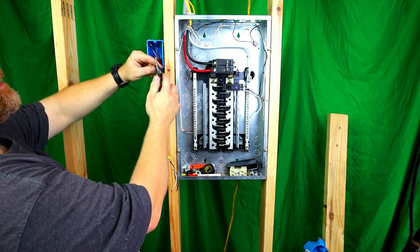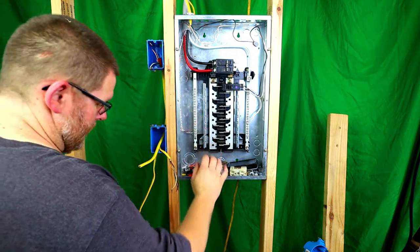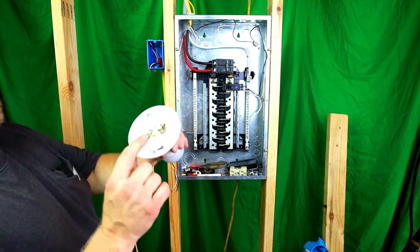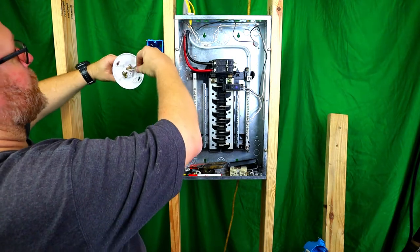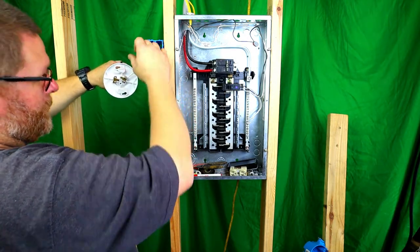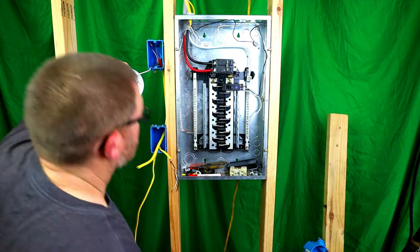Remember what I told you. Brass is the hot. Silver is the neutral. Silver, brass. So we'll hook the neutral up first because what I tell you, it's always best to hook up ground, neutral, and then your hot.